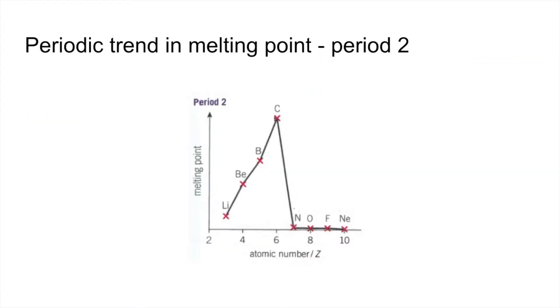What we're going to do now is use this information to explain the periodic trend in melting points. We'll start with period 2, and then on the next slide we'll look at period 3.